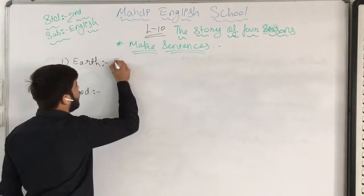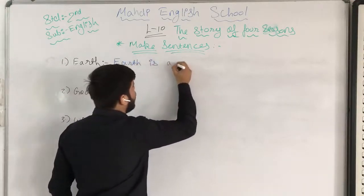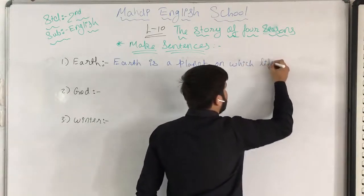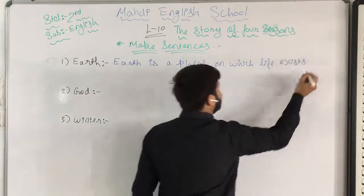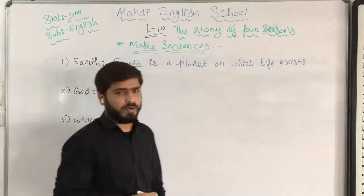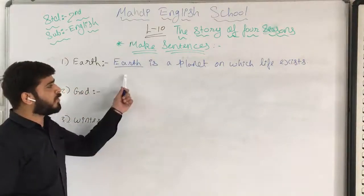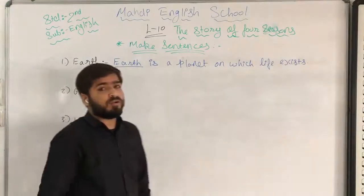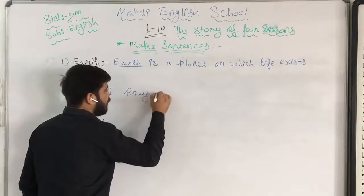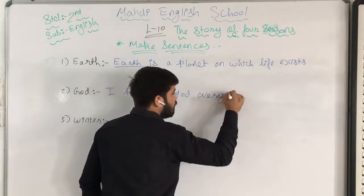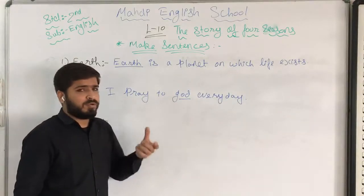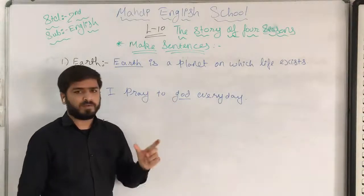Here we can write: Earth is a planet on which life exists. I have used the word earth in the sentence and I will underline it to show that I have used that word. You also have to underline the word wherever you have used it. Number two — God. What do you do to God? You pray to God. So I can write: I pray to God every day. I have underlined the word God because I have used it in the sentence.